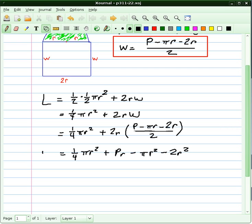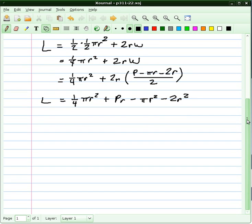This is still L. To optimize the light, we're going to go ahead and take the derivative, L prime. We'll just use our power rule here: bring the two down, that's one-half πr, derivative of Pr is just P, remember P is a constant, minus 2πr minus 4r. I'm going to do a little bit of simplification here.